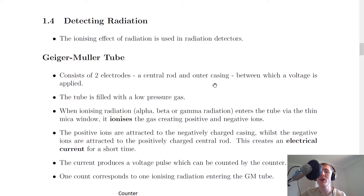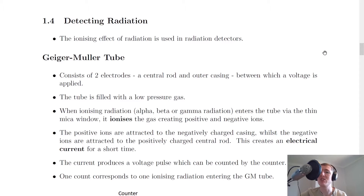The first one we're going to look at is the Geiger-Müller tube. The ionizing effect of radiation is used in radiation detectors. We've already seen that alpha, beta and gamma radiation are three types of ionizing radiation, and we can use this property to detect radiation.